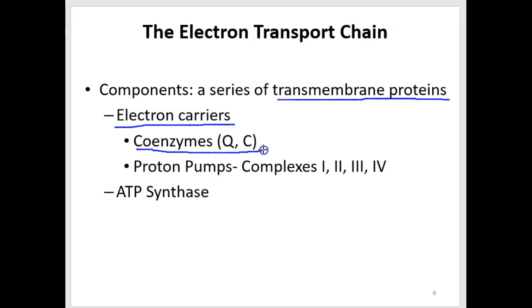Some of the electron carriers are just called coenzymes. Some of them are proton pumps. This you do have to know. It's very important. So as the electrons are moving to the proton pumps, that gives the pumps, or the transmembrane proteins, the energy required to pump protons. So hydrogen ions are going to be pumped.